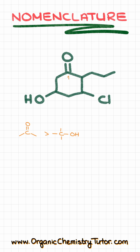So this is going to be my carbon number one. Then we are going to number our molecule in such a way as to give the smallest possible numbers to our substituents, which means that next we are going to go clockwise, giving numbers two, three, four, five, and six.